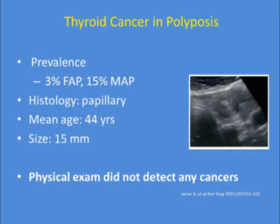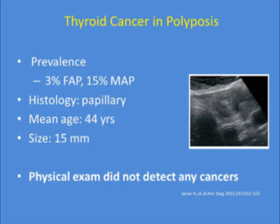Thyroid cancer in polyposis occurs in about 3% of FAP patients in our prospective study and 17% prevalence in MAP patients. These are usually papillary cancers, can be the primary finding, occur at a young age, and are small in size. Importantly, none of the patients with thyroid cancer was detectable by physical examination, so ultrasound screening is recommended — consistent with NCCN guidelines.